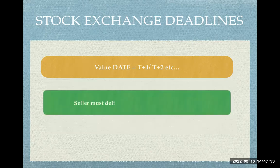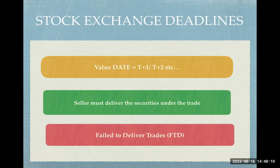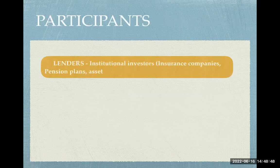Stock exchanges and custodians have their own deadlines — for example, T+1 or T+2. The seller must deliver the securities as their obligation under the trade, even if they sold securities they don't own. To fulfill this, they can borrow from securities lenders. If they don't deliver, it's classified as an FTD — a failed-to-deliver trade — and depositories charge very high penalties and punitive fees. To avoid such penalties from stock exchanges or depositories, STOs who have short-sold will borrow securities from pooled funds like endowment funds, mutual funds, or insurance companies.